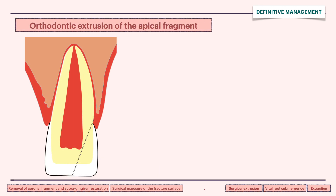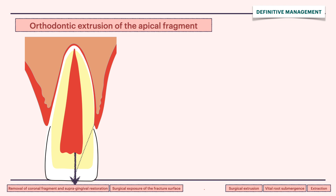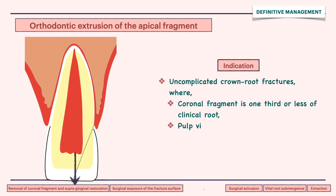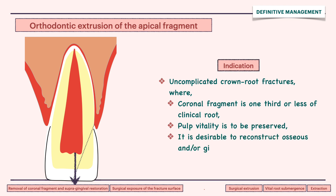In orthodontic extrusion, the fracture is moved to a supra-gingival position orthodontically. It is indicated in uncomplicated crown root fractures where the coronal fragment is one third or less of the clinical root, vitality of the pulp is to be preserved, and it is desirable to reconstruct osseous or gingival defects.